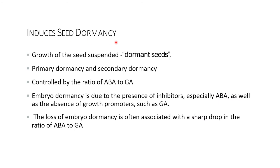Induced seed dormancy: growth of seeds is suspended in dormant seeds. Primary dormancy and secondary dormancy are controlled by the ratio of abscisic acid to gibberellic acid. Embryo dormancy is due to the presence of inhibitors, especially abscisic acid, as well as the absence of growth promoters such as gibberellic acid. Loss of embryo dormancy is often associated with a sharp drop in the ratio of abscisic acid to gibberellic acid.